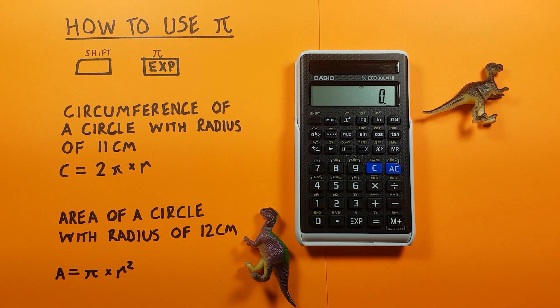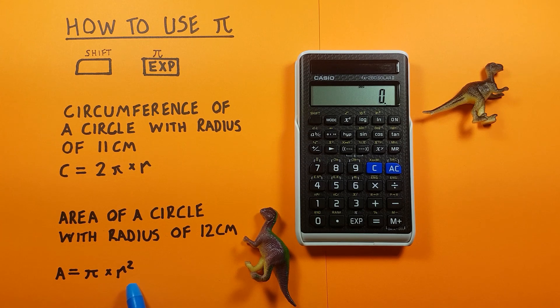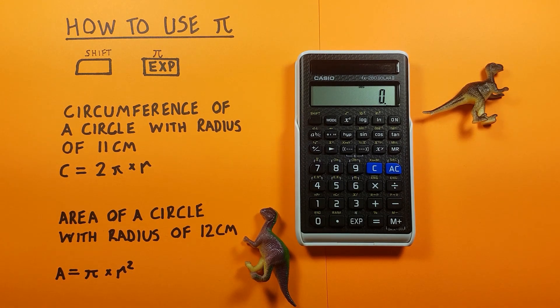Another example, if we want to say find the area of a circle with a radius of 12 centimeters, again we already know the formula which is Pi times R squared. We can just enter it straight into our calculator.